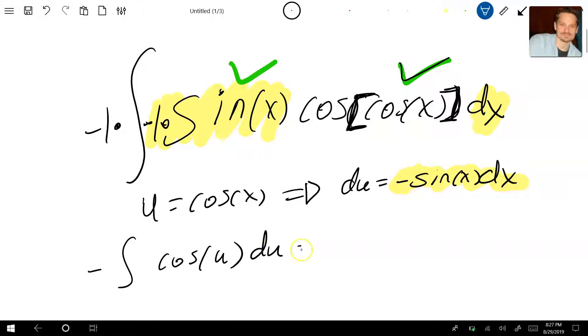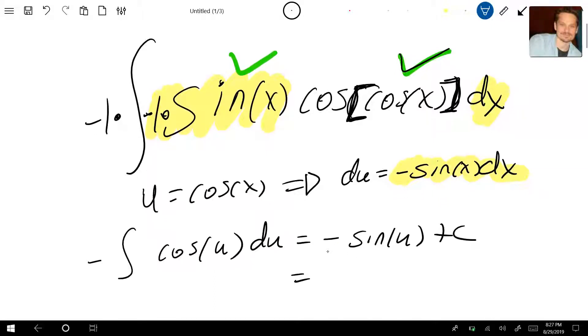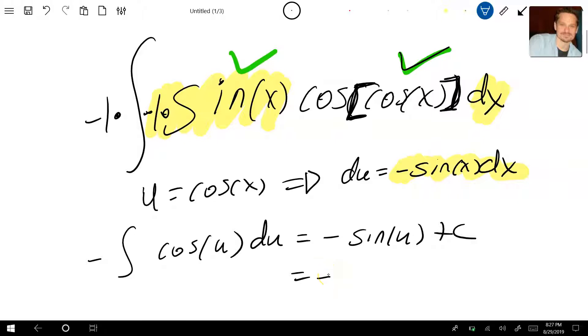And at this point, you just anti-differentiate. So negative sine u plus c. And do keep in mind that u is defined as cosine x here. So I'm just going to go back to that variable by doing negative sine cosine of x plus c.